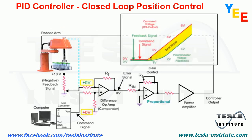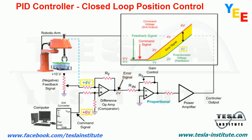In this system, there is not an immediate response by the robotic arm to the command signal. The delay of the arm and feedback signal creates a positive error signal voltage at the output of the difference op-amp.